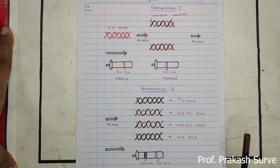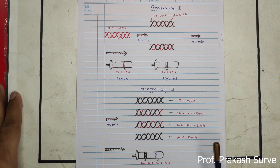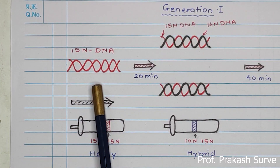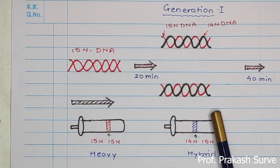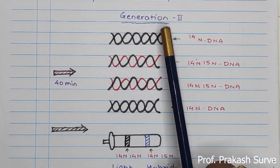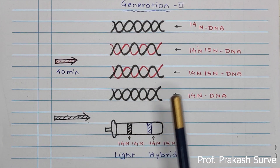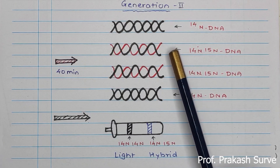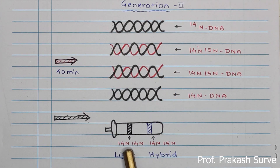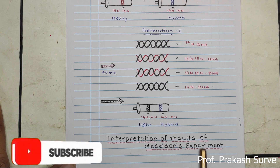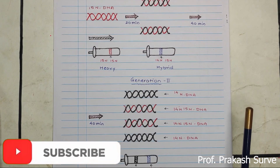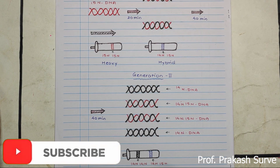So this is what we have finished about the interpretation of the results of Meselson's experiment. First we had the 15N type DNA, then after 20 minutes we got the hybrid one — first one is heavy type, second one is hybrid. After 40 minutes in Generation 2 we got one light and another hybrid. Here we got two bands: the 14N type and the 14N-15N hybrid type together. This indicates that DNA replication is of the semi-conservative type, which is the interpretation of the result of Meselson's experiment. If you like my channel, subscribe and share with your friends. Thank you.